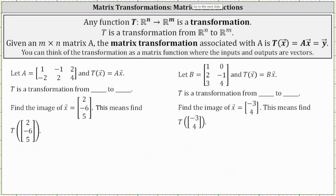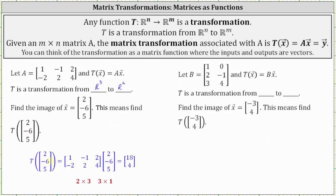Let's take a look at some examples. We are given matrix A, which is a two by three matrix, and the matrix transformation is t of vector x equals matrix A times vector x. Since matrix A is a two by three matrix where m is two and n is three, t is a transformation from R3 to R2. We're asked to find the image of vector x, which means we need to find t of the vector (2, -6, 5). The product of matrix A and vector x is the vector (18, 4). Matrix A is two by three, vector x is three by one — because three equals three we can multiply, and the result is a two by one matrix, which verifies this is a transformation from R3 to R2.